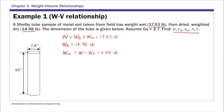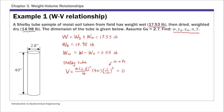On the volume side, the dimension of the Shelby tube is given, so we can calculate the total volume. It's a cylindrical shape — we know the length and diameter, so the volume is pi times d squared over 4, times the length, which equals 40 inch cubed. Converting to cubic feet using 1/12 to the power of 3, the total volume is 0.143 cubic feet.